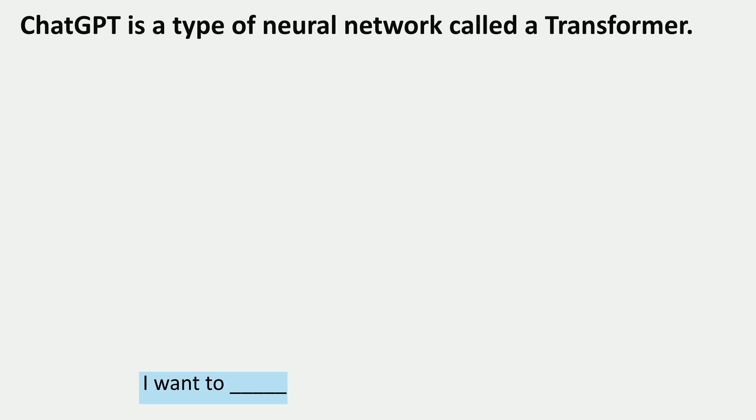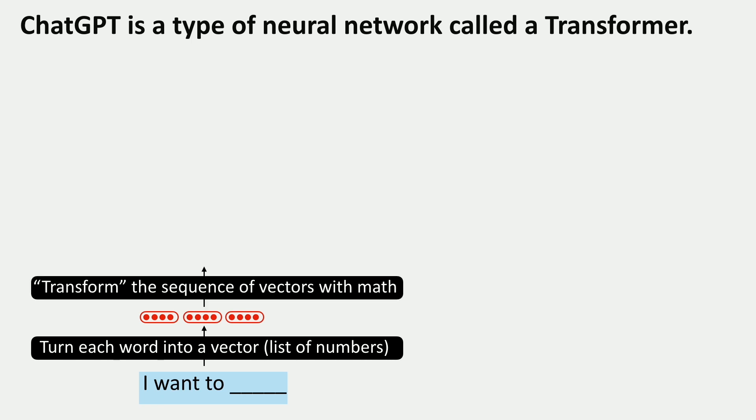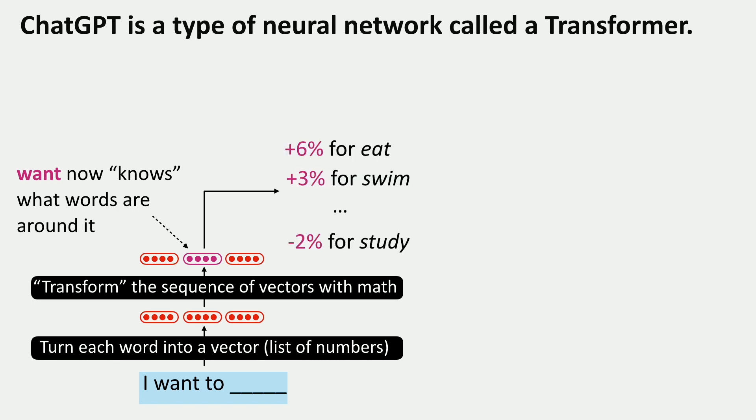The neural network used in ChatGPT is called a transformer. What a transformer does is turn each word into a vector — a list of numbers — and then applies a bunch of different transformations by looking at each of these vectors and using information about the surrounding words to inform or change that vector. So when predicting what impact 'want' has on final probabilities, we're not just using the word 'want' in isolation — we're using the knowledge that it occurs in context, which lets us make better probability estimates.